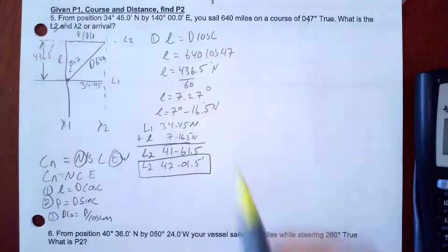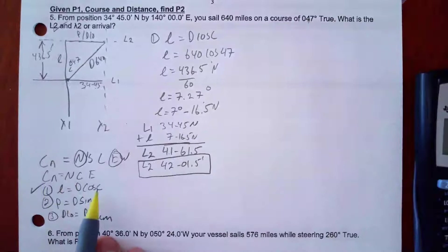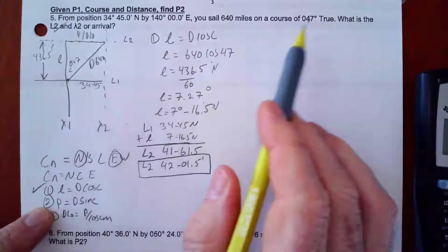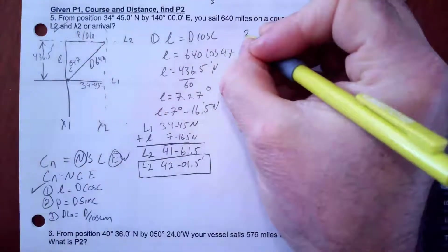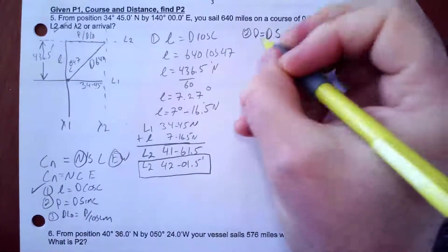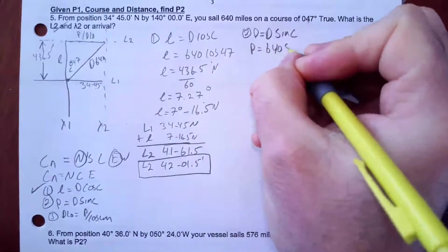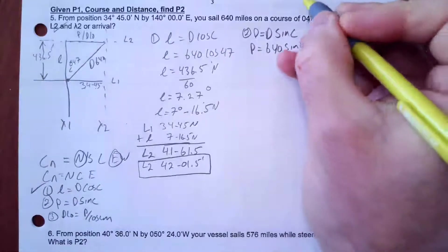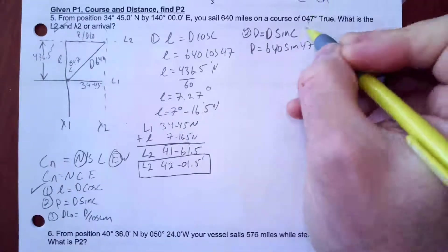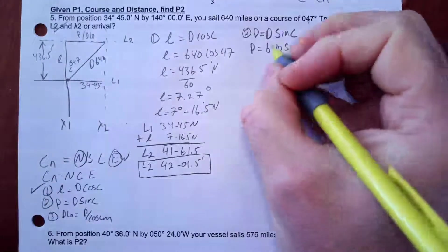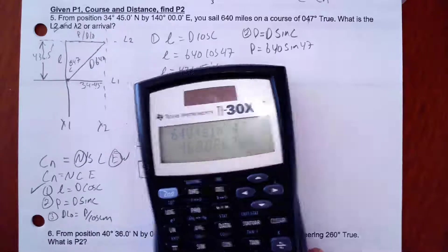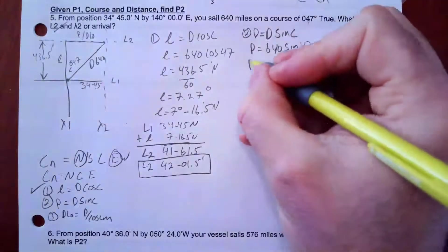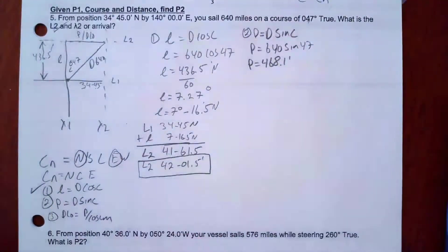I've now answered the first question. Now I'm ready to go on to the second formula. In order to calculate my change in longitude for the arrival point, I need to do two more formulas. First, I need to calculate P. Formula two: P equals D sine C. P is 640 times sine of 47°. CN equals C here, so I can substitute directly. 640 times sine of 47° gives me P = 468.1 minutes.